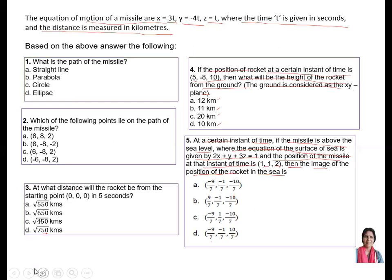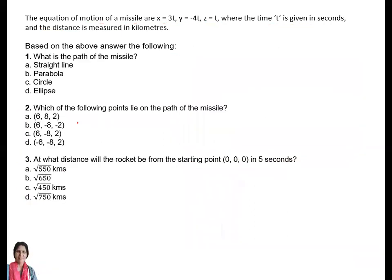We will go one by one. First: x = 3t, y = -4t, z = t. That means x, y, and z are all functions of t, so it is the equation of a straight line. A is the correct answer.